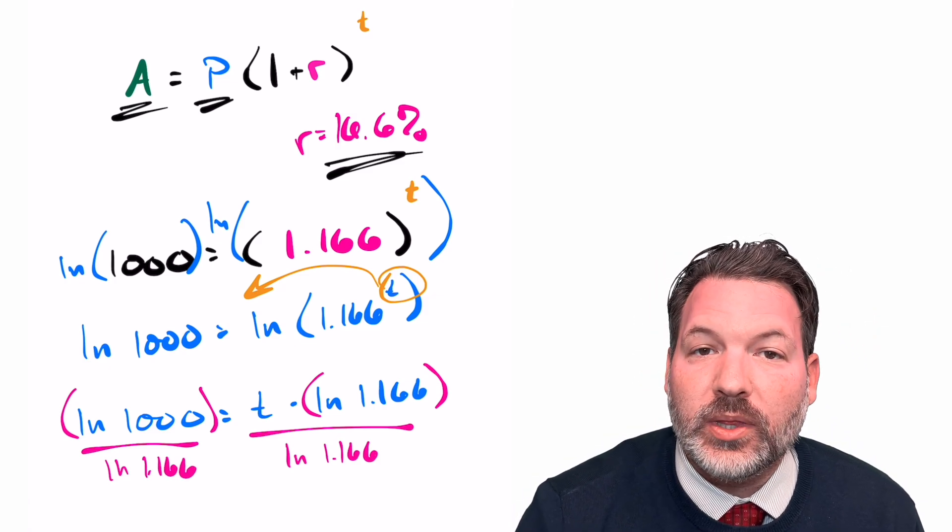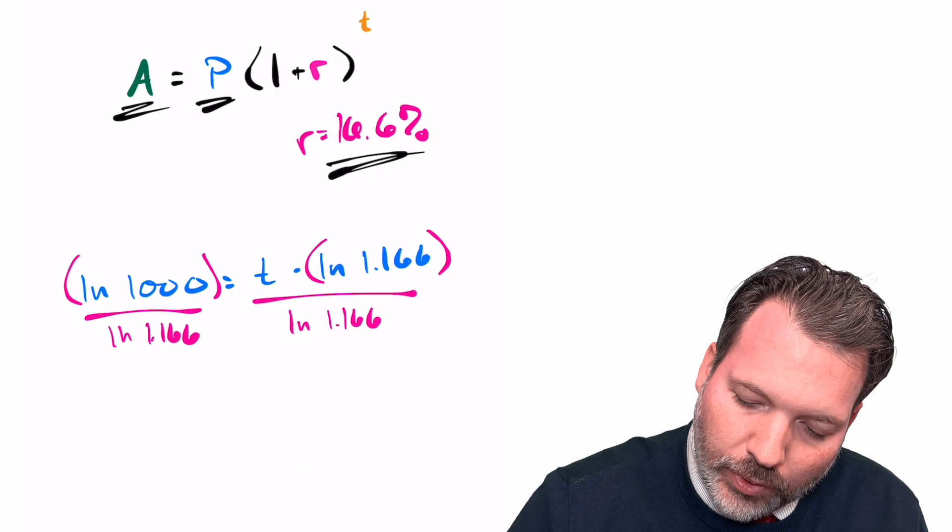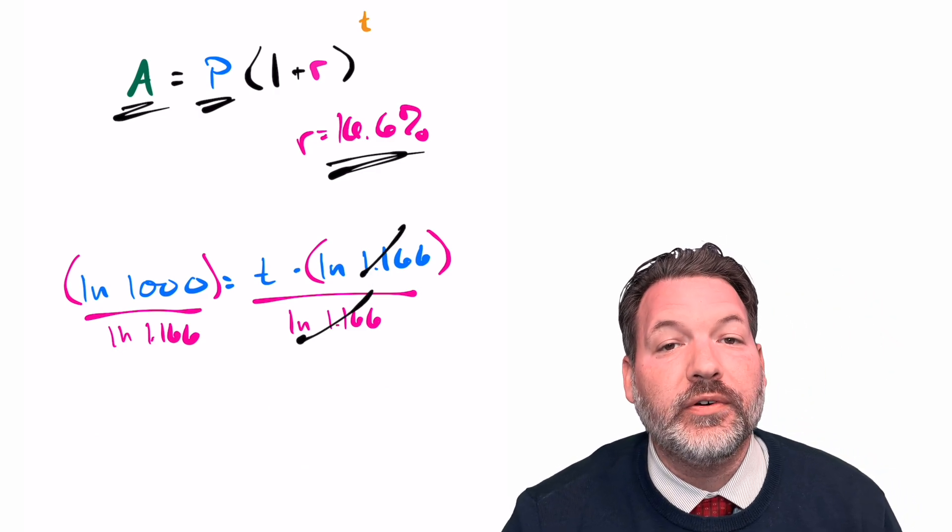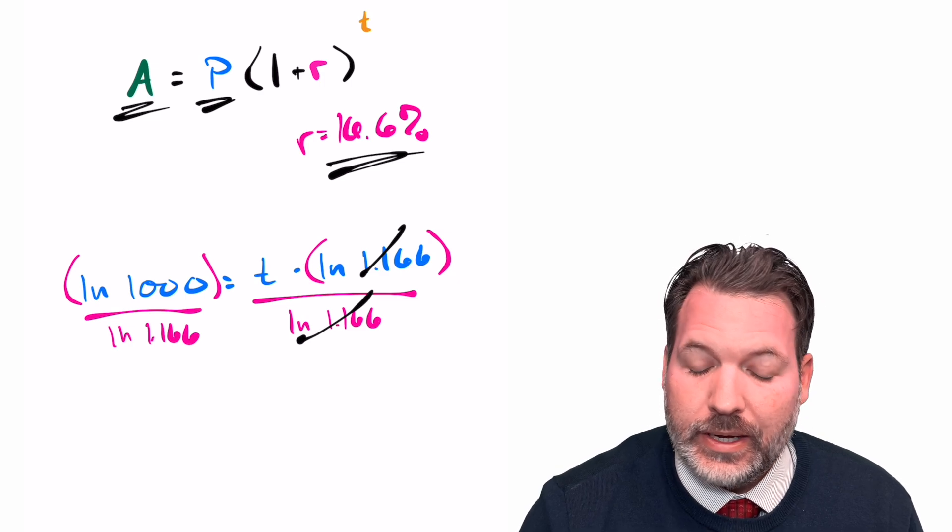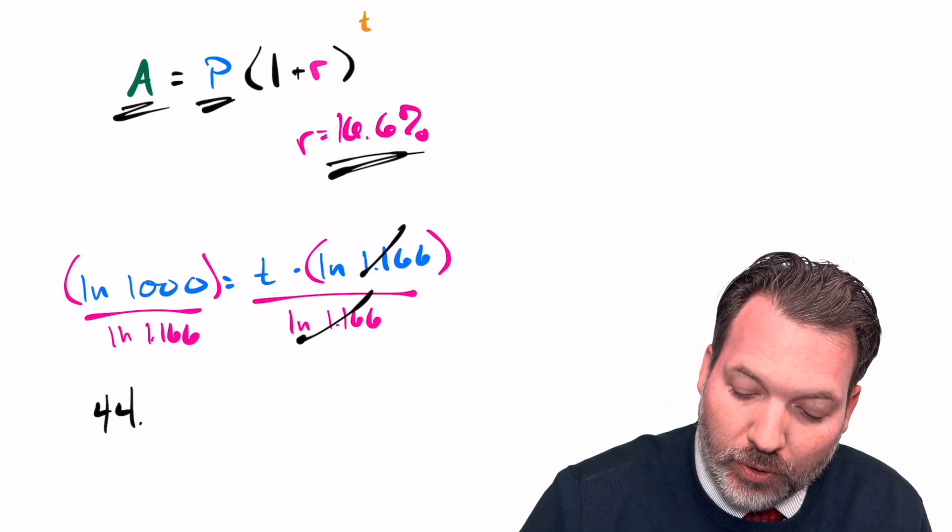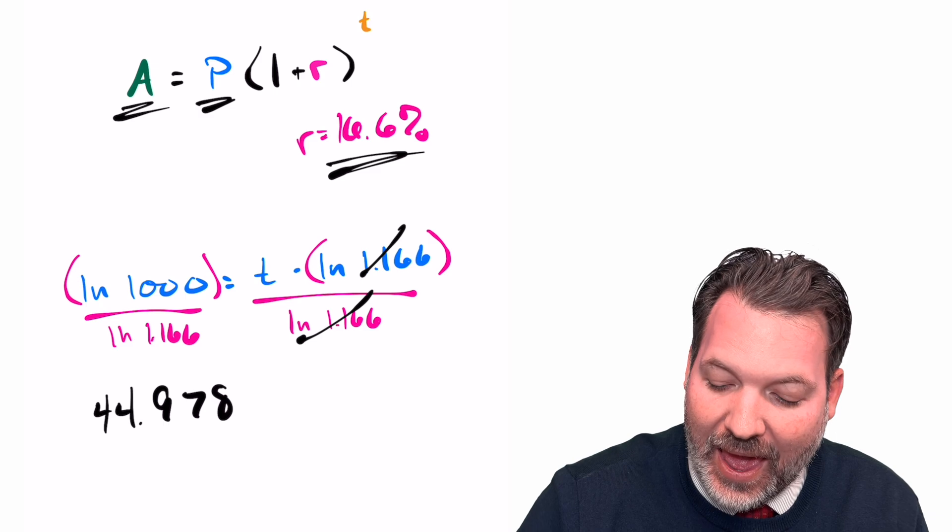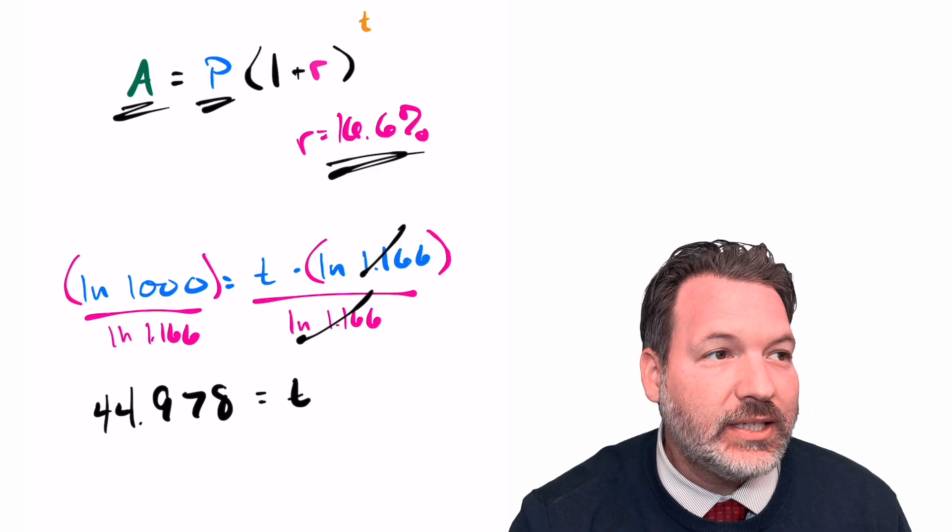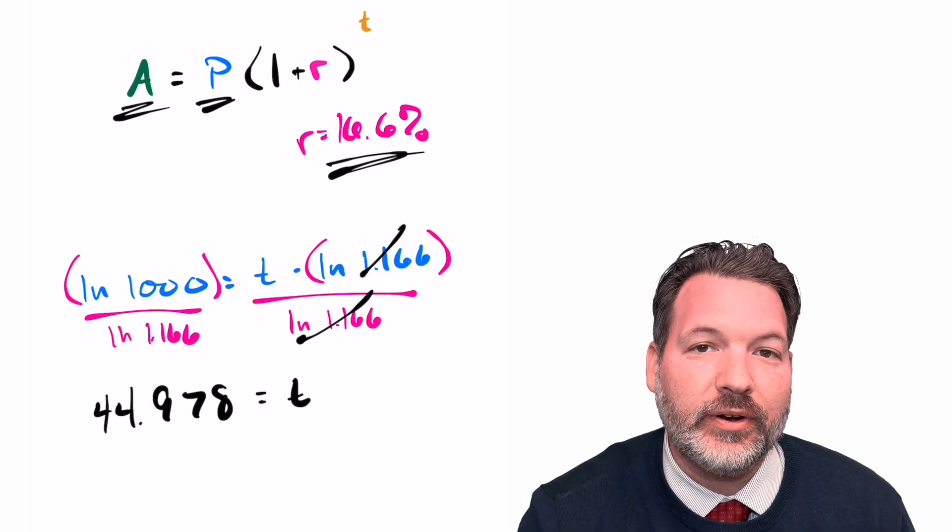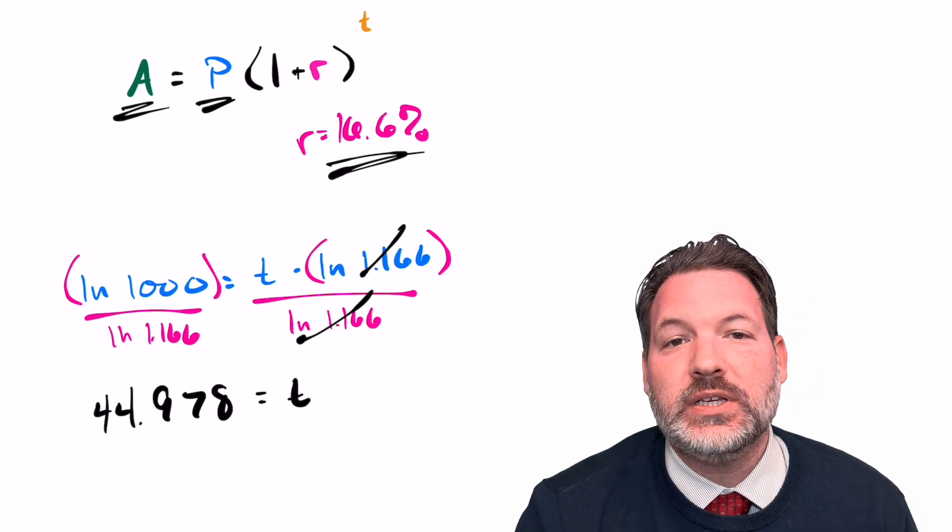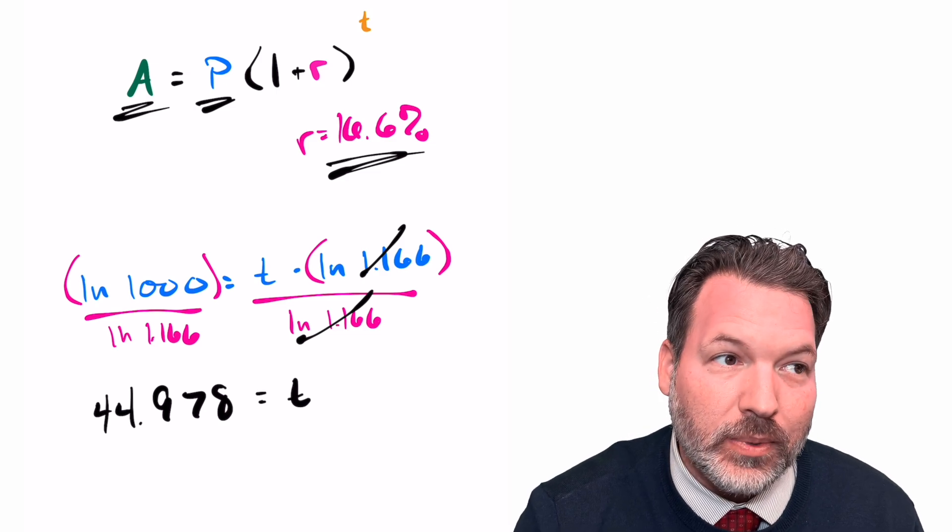And again, this is something we can type into our calculator. When we do type that into the calculator to evaluate, what we end up with is 44.978 for T. So it takes us 45 years to get to that first million dollars starting from our thousand dollar investment, but then just another 15 years to go from a million to 10 million. This is the power of compound growth.